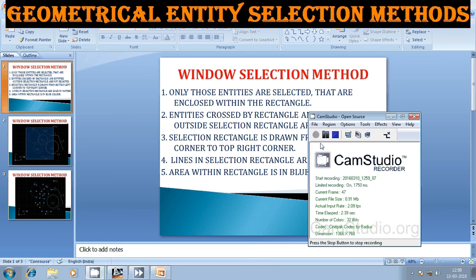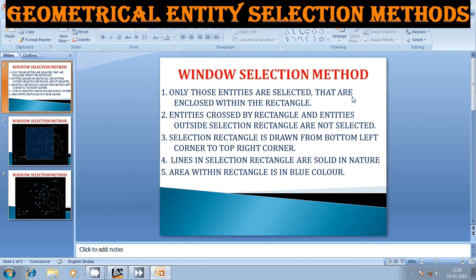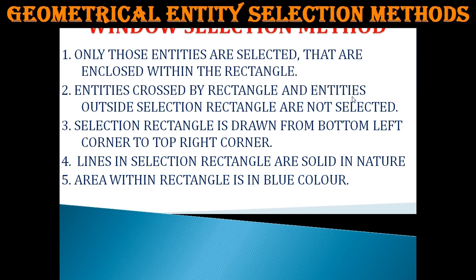Welcome. We will be discussing geometrical entity selection methods, concentrating on the first method: the window selection method. In window selection, only those entities that are completely enclosed within the selection rectangle are selected.